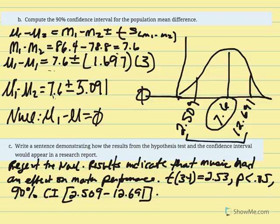This concluding statement provides all important statistics for someone consuming our research — the type of test performed, the significance of results obtained, and a confidence interval giving a sense of where the true population mean actually resides.